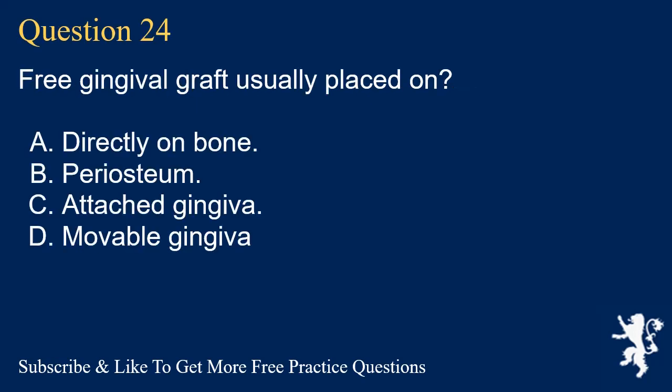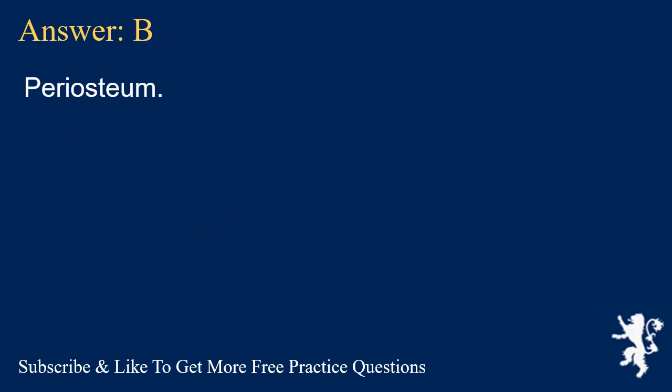Question 24. Free gingival graft is usually placed on? A. Directly on bone. B. Periosteum. C. Attached gingiva. D. Movable gingiva. Answer: B. Periosteum.